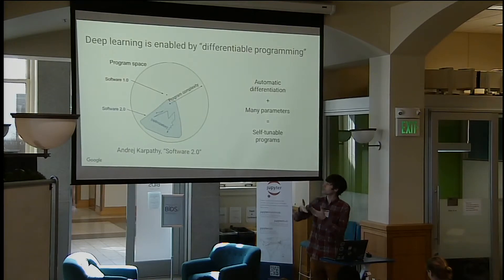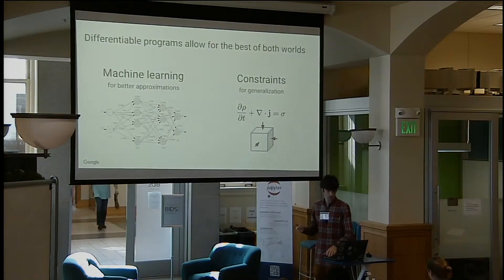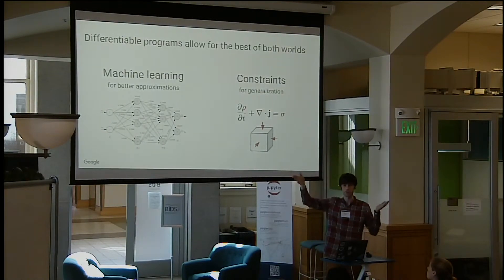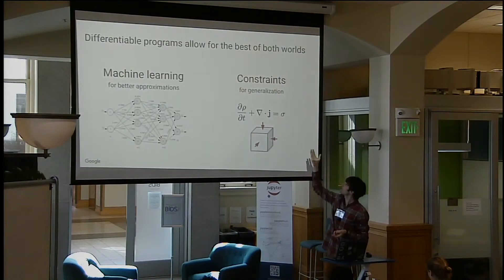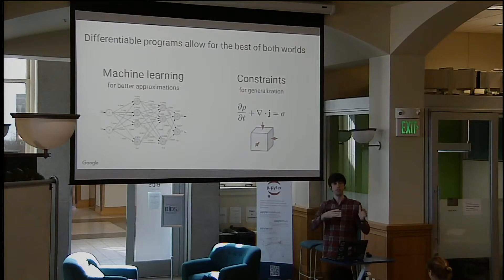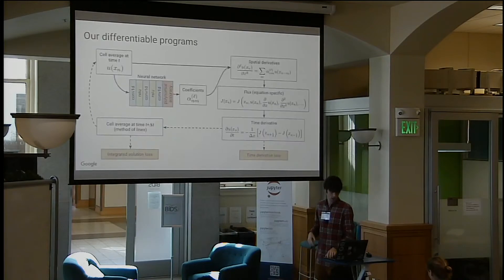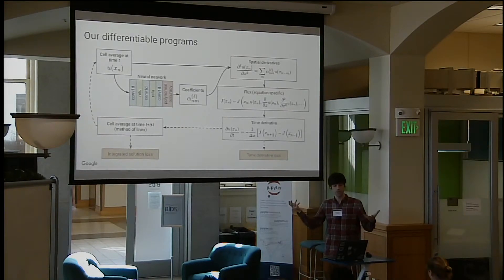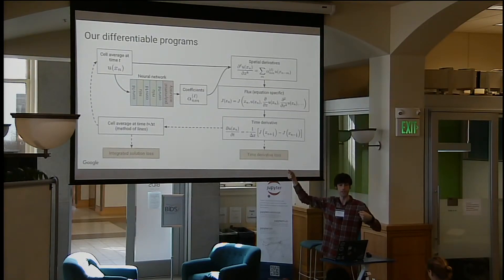We can train this in a generic way with deep learning frameworks, and this gives us the best of both worlds from the machine learning side and the physics side. We can easily put in constraints like conservation laws — this is a continuity equation — using a finite volume technique. Our algorithms look basically exactly like standard numerical methods for solving these equations, except we turn some of those components into learned components, optimizing some parameters using very small neural nets with just a few layers.